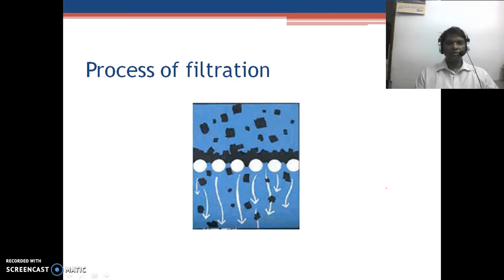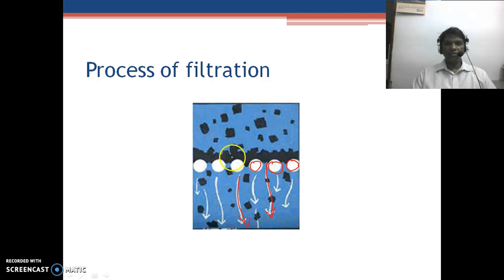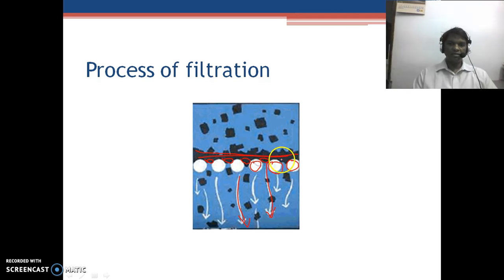Talking about the filtration process, when we go for filtration, the slurry comes in, the filtrate passes down through the filter paper or septum, and the solid substance remains on the surface. After some time — a few minutes or few hours — these solid particles go and clog the pores. All the pores become clogged, which gradually reduces the rate of filtration and eventually stops the process.